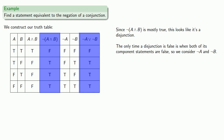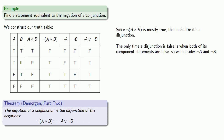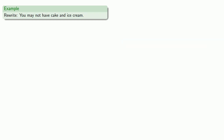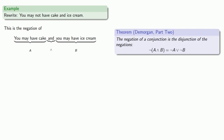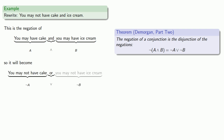This gives us the second of De Morgan's rules: the negation of a conjunction is the disjunction of the negations. So we may rewrite the statement 'you may not have cake and ice cream.' This appears to be the negation of 'you may have cake and you may have ice cream.' De Morgan's Law says the negation of a conjunction is the disjunction of the negations, so this becomes not a or not b: you may not have cake or you may not have ice cream.